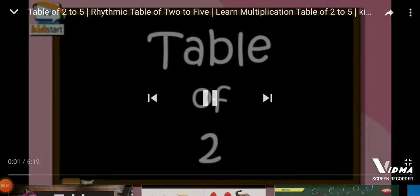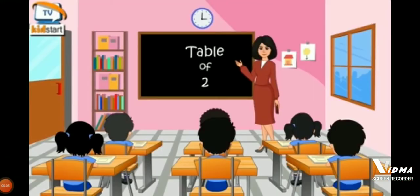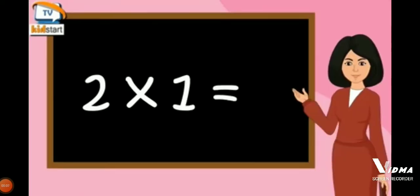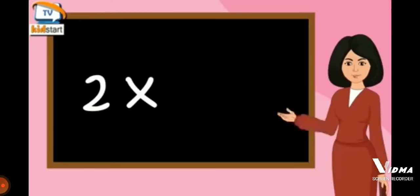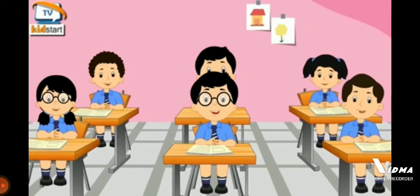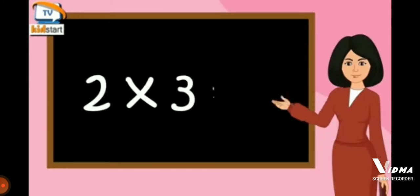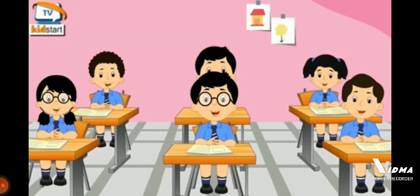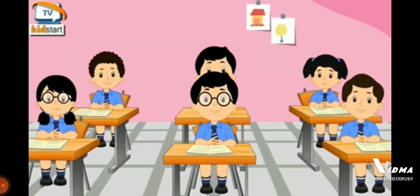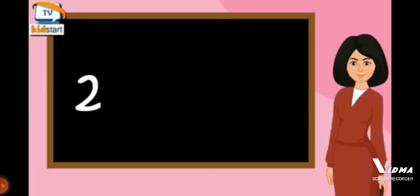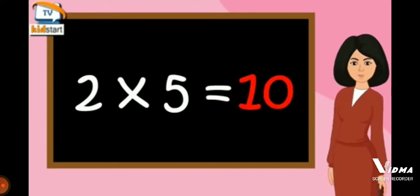Let's learn the table of two. Two ones are two. Two twos are four. Two threes are six. Two fours are eight. Two fives are ten.